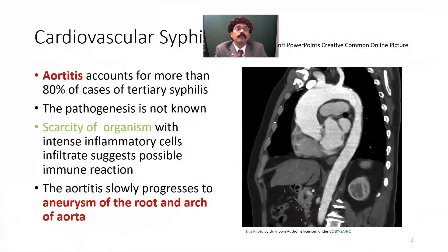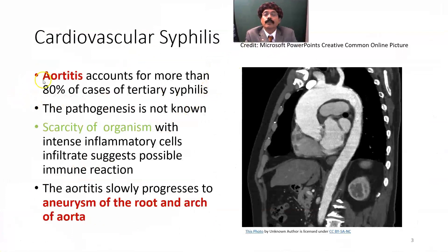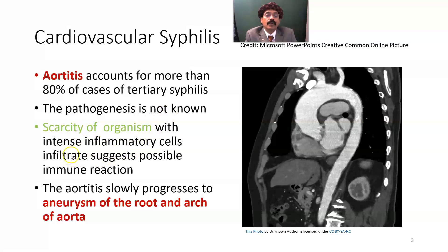In cardiovascular syphilis, there will be aortitis — inflammation of the aorta — which accounts for more than 80% of cases of tertiary syphilis. The pathogenesis is not fully known. The scarcity of the organism with intense inflammatory cells like plasma cells and lymphocytes suggests a possible immune reaction. Aortitis slowly progresses to aneurysm.